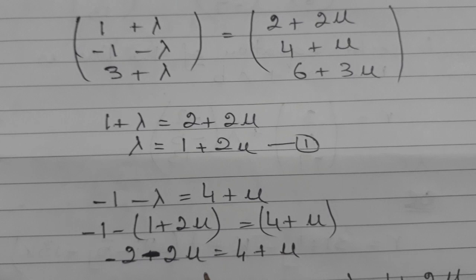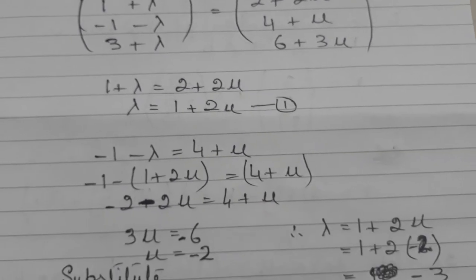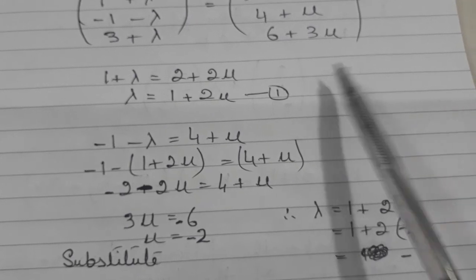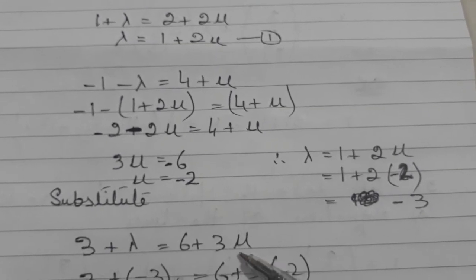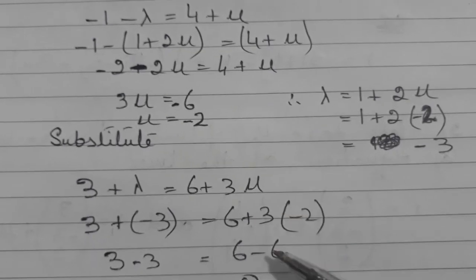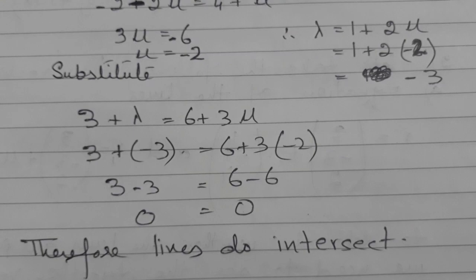And then the value of lambda and mu we will get, we will substitute it back in the third equation which we are doing here. Now when we substitute in it, if the answer comes same then it means lines are intersecting.